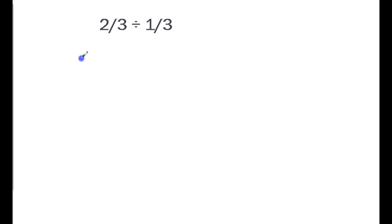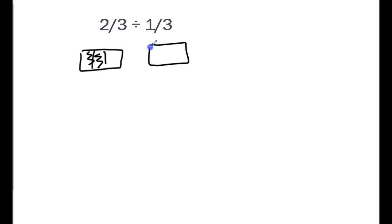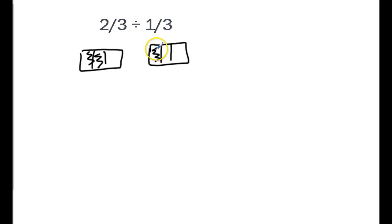An area model looks something like this. We're going to separate this into thirds and cover up two of them, then separate our second number into thirds and cover up one of them. Since these both have common denominators, we can work this problem — it's asking how many one-thirds fit into two-thirds. I see one can fit here and another one can fit here, so my answer is two. There are two one-thirds in two-thirds.